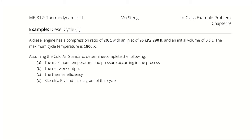A diesel engine has a compression ratio of 20 to 1, an inlet pressure of 95 kilopascals, an inlet temperature of 290 kelvin, and an initial volume of 0.5 liters. The maximum cycle temperature is 1800 kelvin. Assuming the cold air standard, we need to: A) find the maximum temperature and pressure in the process, B) the net work output, C) the thermal efficiency, and D) sketch a PV and TS diagram of the cycle.